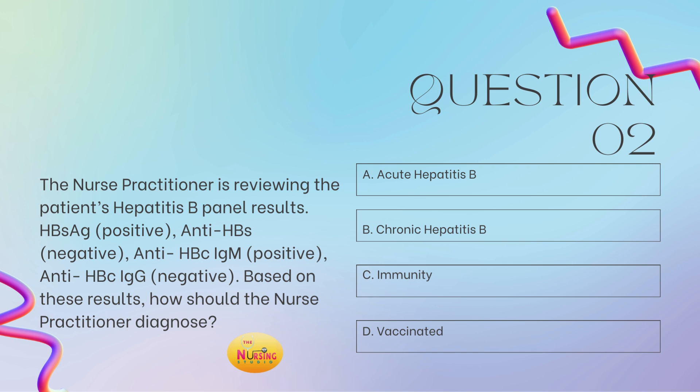If it's positive for the surface antigen HBSAG, that means they have it. If it's positive for the anti-HBS, that means they have antibodies. Here, they have hepatitis B in some format because the surface antigen is positive. Now we're looking at the IgM and IgG. The core IgM is positive here and the IgG is negative. Positive IgM means they have it right now, at this minute — think M for 'at this minute.' So the answer is A, acute hepatitis B. IgG is the chronic phase; if that were positive, we would say it was chronic.